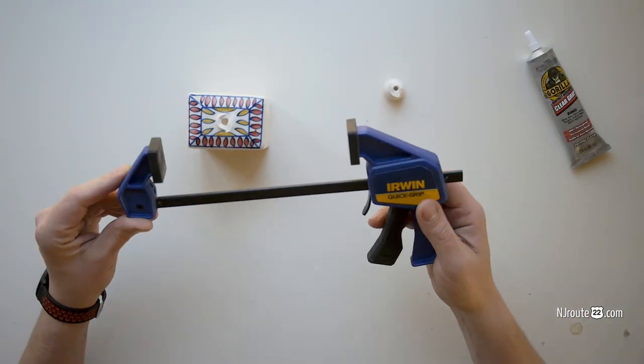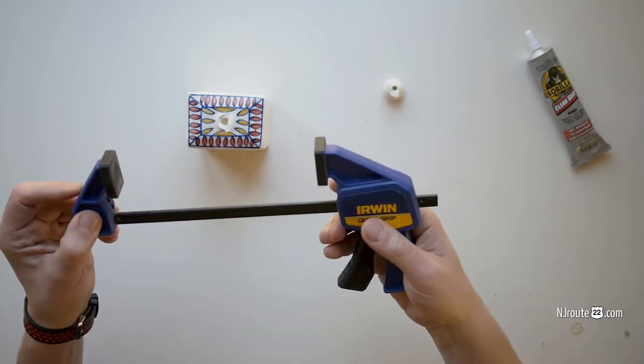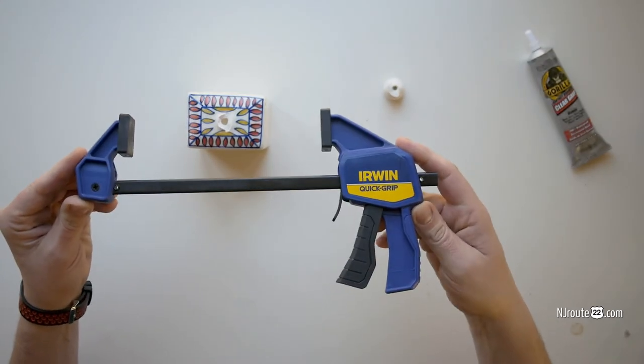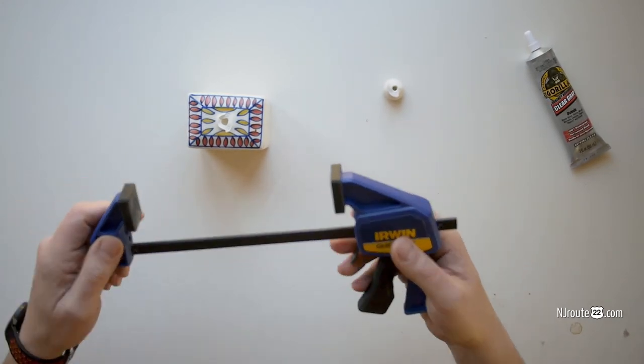And another important piece when gluing anything is having a grip. These are called Irwin Quick Grips. I absolutely love these things. I have a lot of them. You can never have enough.